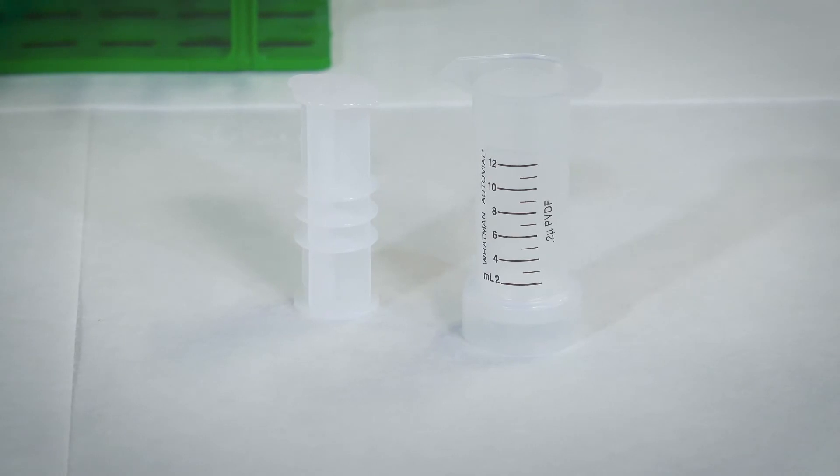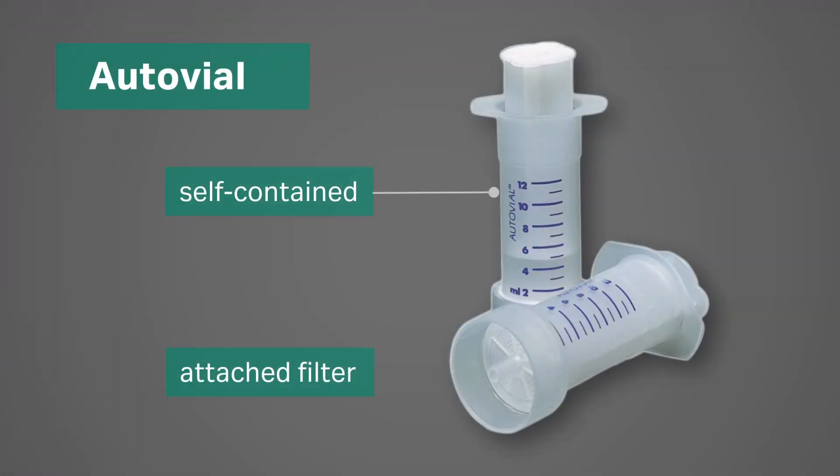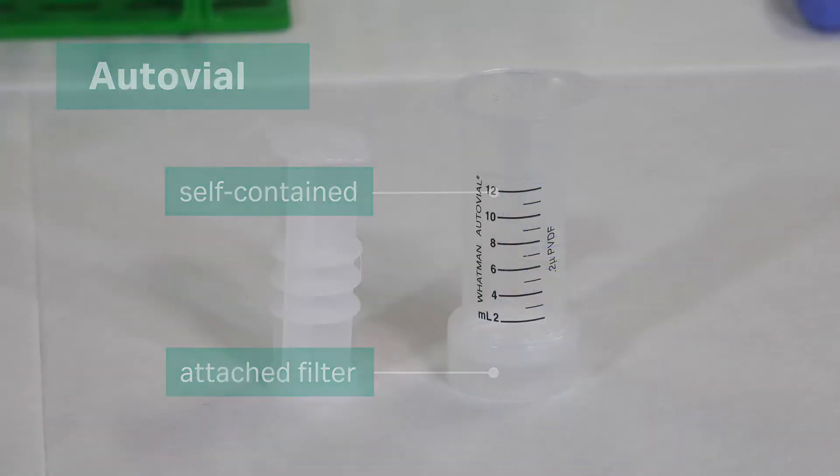Now let's switch to the AutoVial. The AutoVial is one self-contained unit with the syringe filter attached to the base. A single unit for ease of ordering.